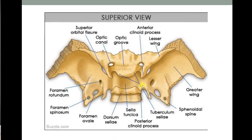Particularly here is the sphenoid bone, with the body of the sphenoid bone at the center. You can see the lesser wing and the greater wing of the sphenoid bone; in the greater wing you find the major foramina — foramen ovale, foramen spinosum, foramen rotundum, etc. The lesser wing of the sphenoid bone extends medially into a process called the anterior clinoid process. Remember that, because the dural fold attaches here to the anterior clinoid process.